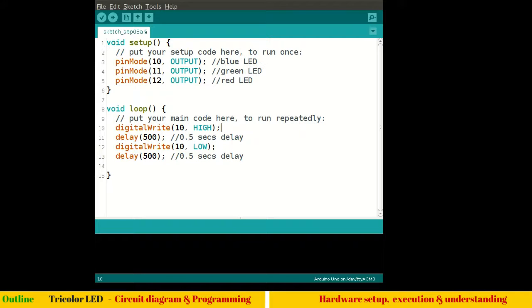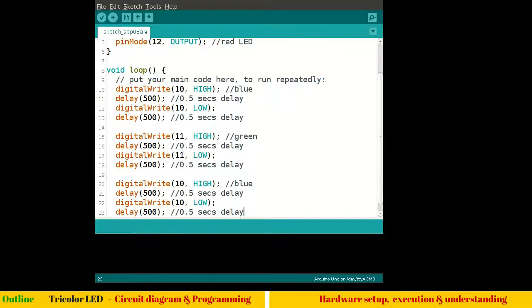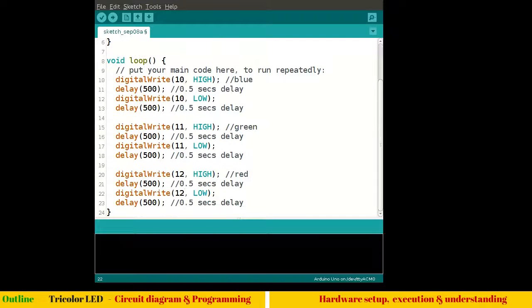Let me write it here also blue. Instead of writing 10, 11, 12, we could have assigned them in a variable, so we will do that from next experiments onward. Let me copy these four lines and simply paste it. Instead of blue is green now. And 10 is 11. Paste red, 12 and 12. I think that's it.